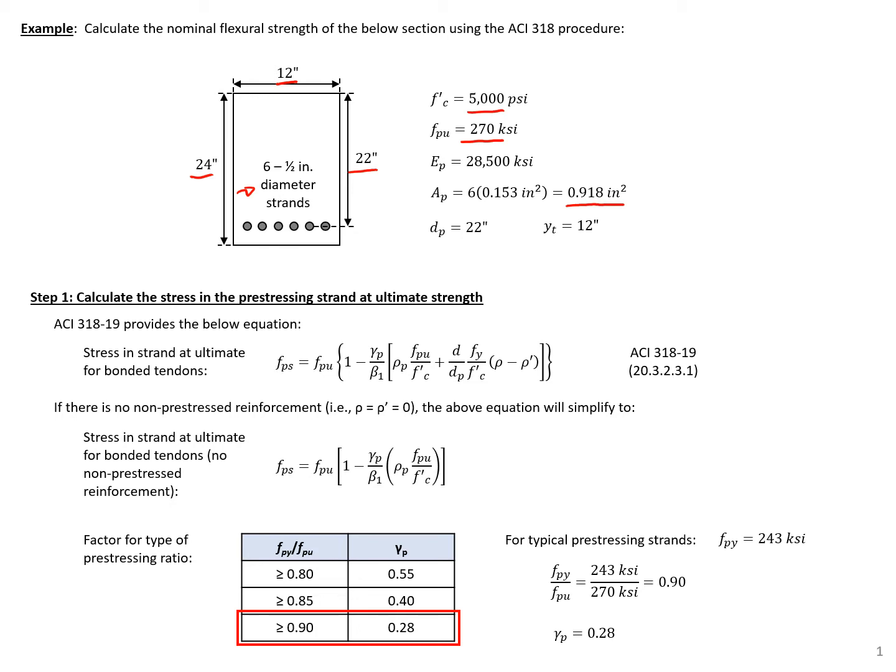Our first step is to use the ACI 318 equation for calculating the stress in the prestressing strand at nominal strength. Note that we don't have any non-prestressed reinforcement, so rho equals rho prime equals zero. In this case, the equation simplifies to the form shown here.